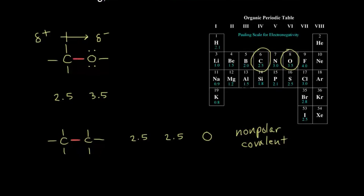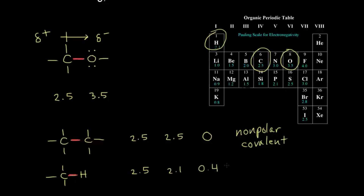Let's compare carbon to hydrogen. If I have a bond between carbon and hydrogen and I want to know what happens to the electrons in red, we've seen that carbon has an electronegativity value of 2.5, and hydrogen has a value of 2.1. So that's a difference of 0.4. There is a difference in electronegativity between those two atoms, but it's a very small difference. Most textbooks would consider the bond between carbon and hydrogen to still be a nonpolar covalent bond.